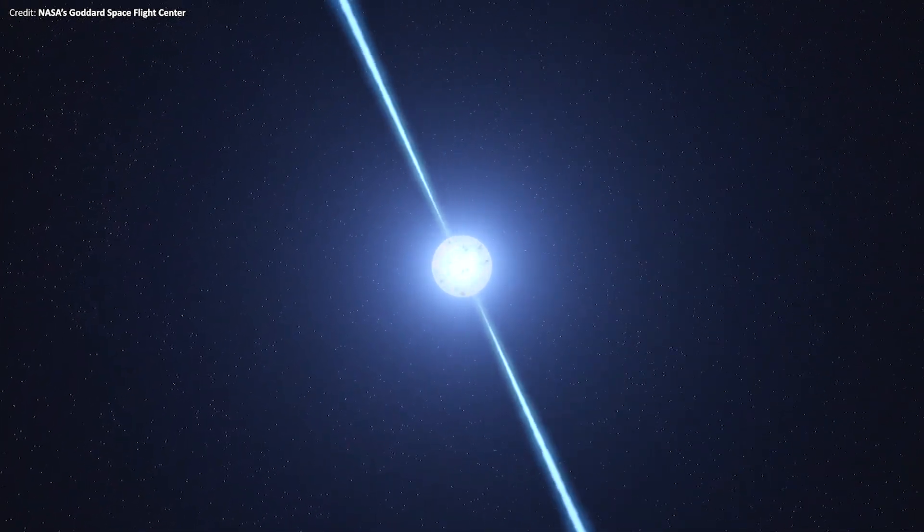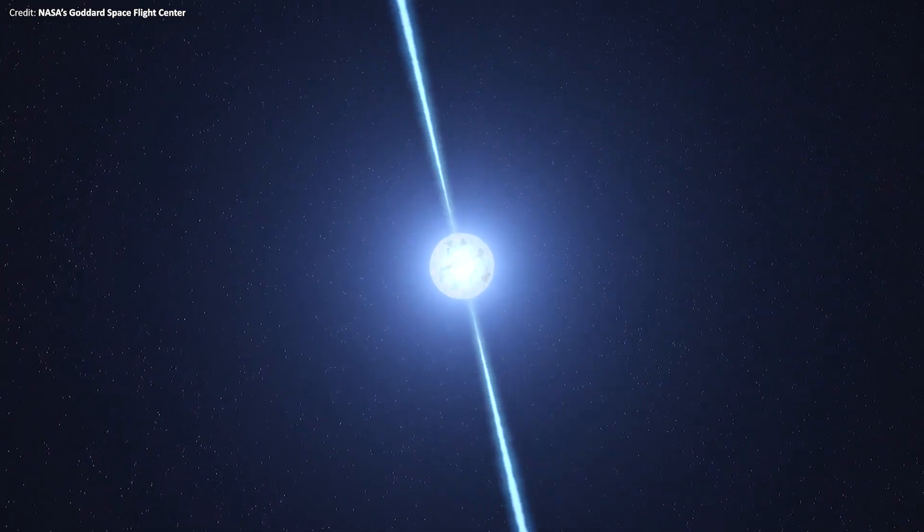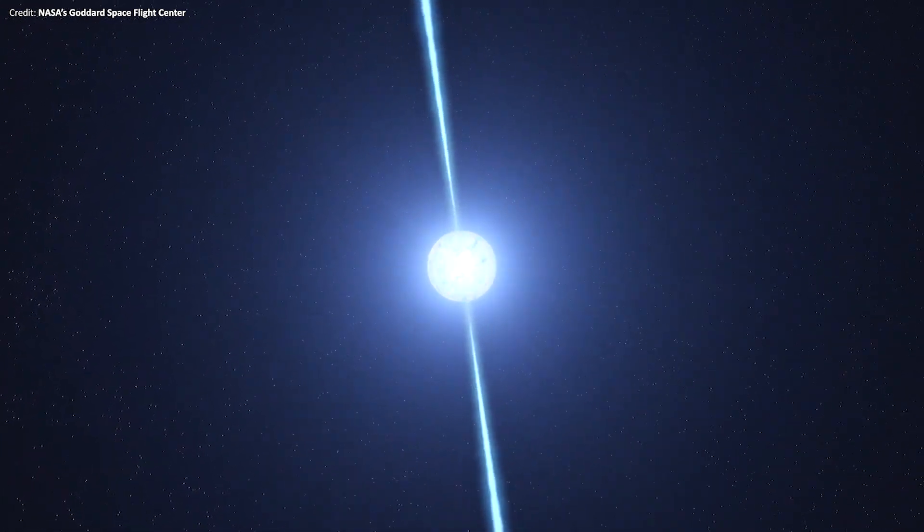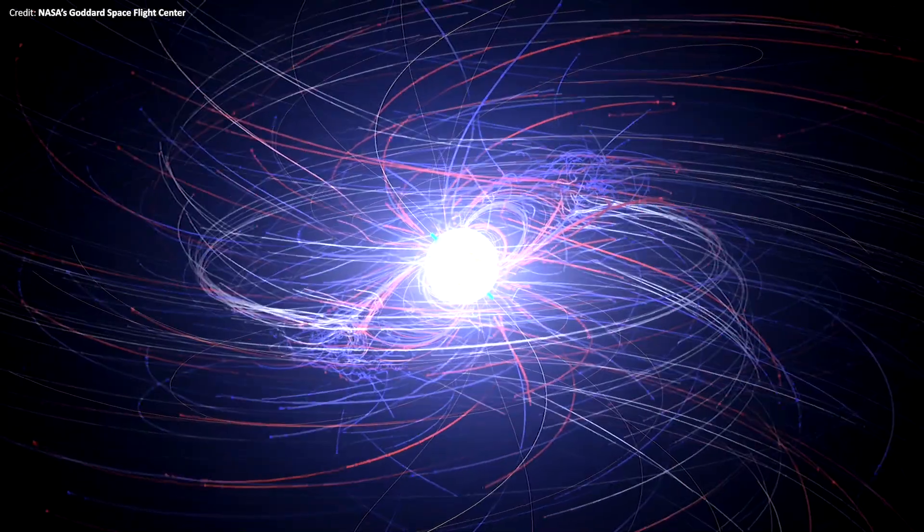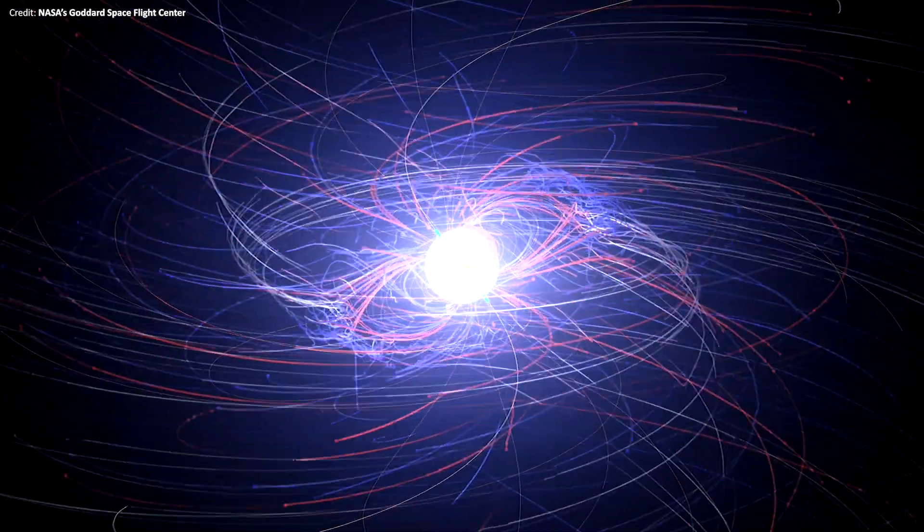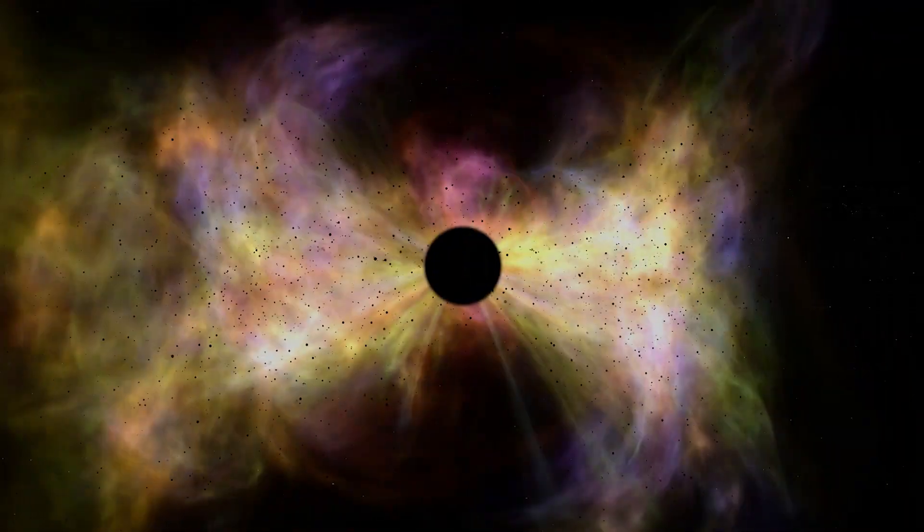Beyond the mass limit of a neutron star, which is about three solar masses, gravity becomes overwhelming and collapses the star even further, creating a black hole.